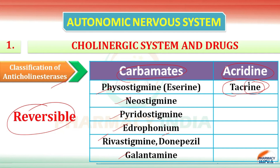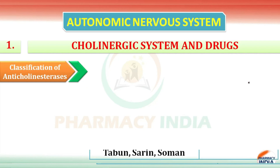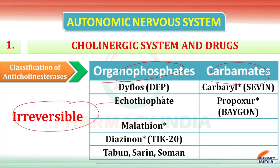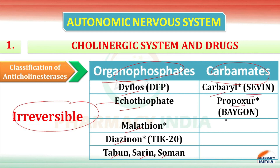The second category of anticholinesterases is irreversible. In irreversible there are two classes: organophosphates and carbamates. Organophosphates include DFP, ecothiophate, malathion, diazinon, tabun, sarin, and soman. In carbamates there is carbaryl, known as Sevin, and propoxur, known as Baygon.